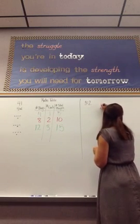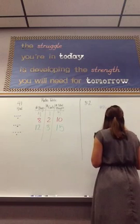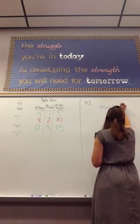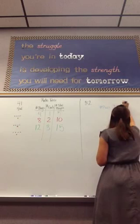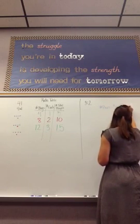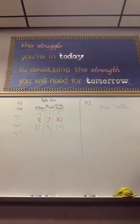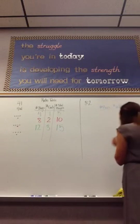we could make a ratio table for it. So, number of boys, number of girls, and then total of players.